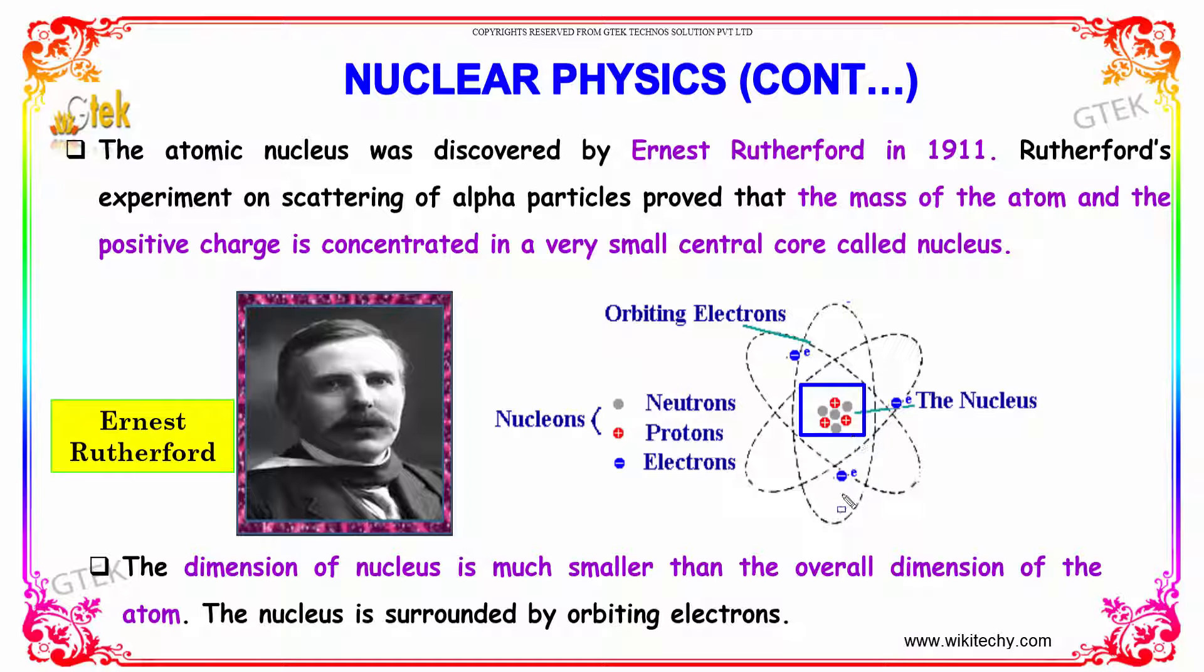The dimension of nucleus is much smaller than the overall dimension of the atom. The nucleus is surrounded by orbiting electrons. You are able to see the orbiting electrons here.